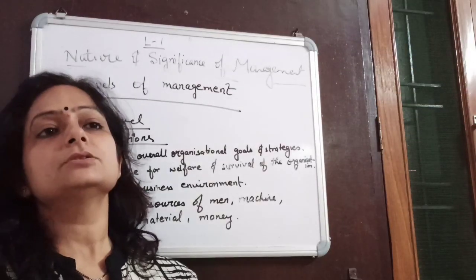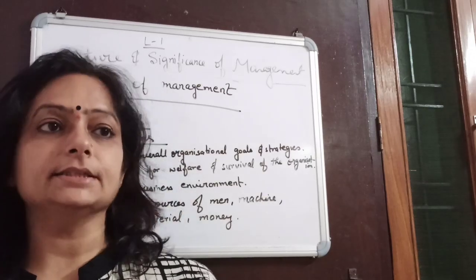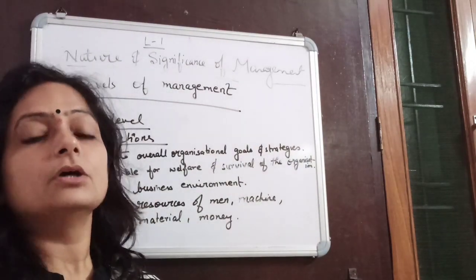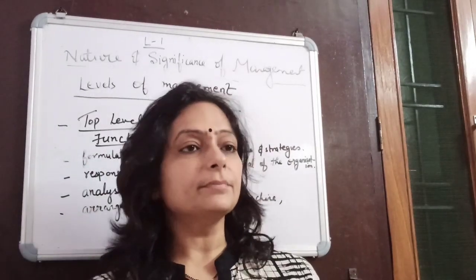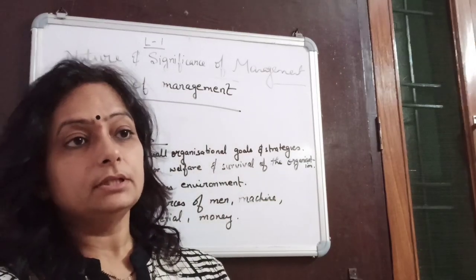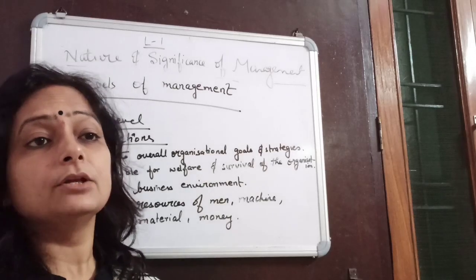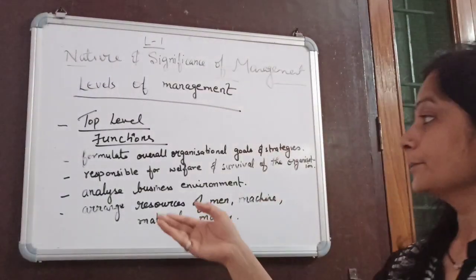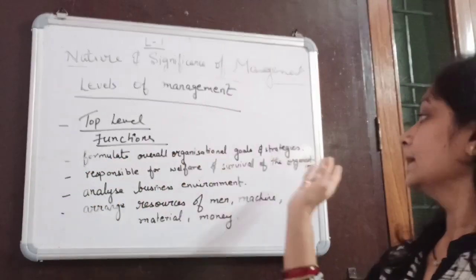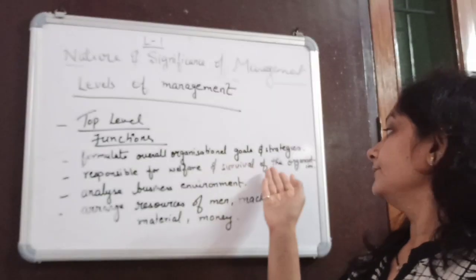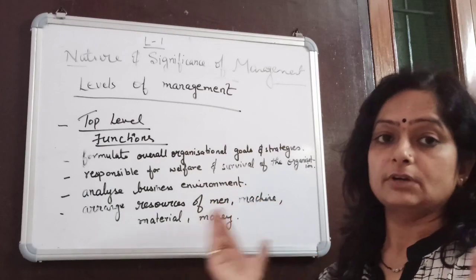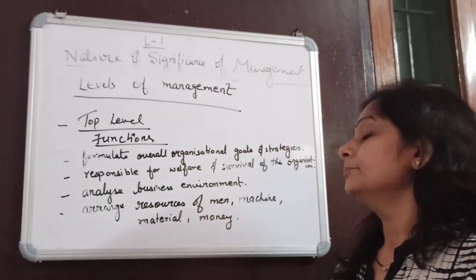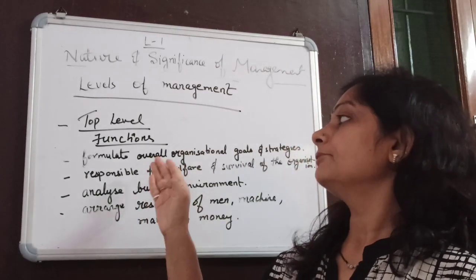Top level management consists of the senior-most representatives of an organization, usually referred to as Vice President, CEO, President, or Chairman. The number of managers at this level is very few, and lots of creative thinking is required. Their functions include formulating overall organizational goals and strategies, being responsible for the welfare and survival of the organization, analyzing the business environment, and arranging resources of men, machine, material, and money.